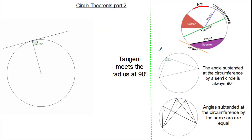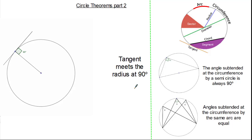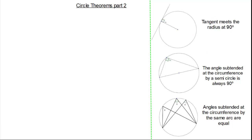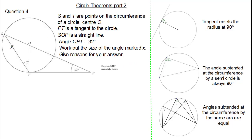Now let's look at our next circle theorem: the tangent meets the radius at 90 degrees. No matter where the tangent is, it will always meet the radius at 90 degrees. This is one of the nicest circle theorems because it's the easiest one to recognise. Now we have three circle theorems — some are easier to spot than others. The question says points S and T are points on the circumference with centre O. PT is a tangent to the circle, SOP is a straight line, and angle OPT is 32 degrees. We are asked to work out angle X and must give reasons. See if you can try, and press pause if you need.